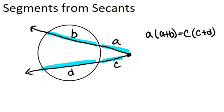One way to think about this is the length of the outside times the length of the whole thing will equal the length of the outside times the length of the whole thing. So for example, if we knew that A was 2, B was 8, and C was 3,